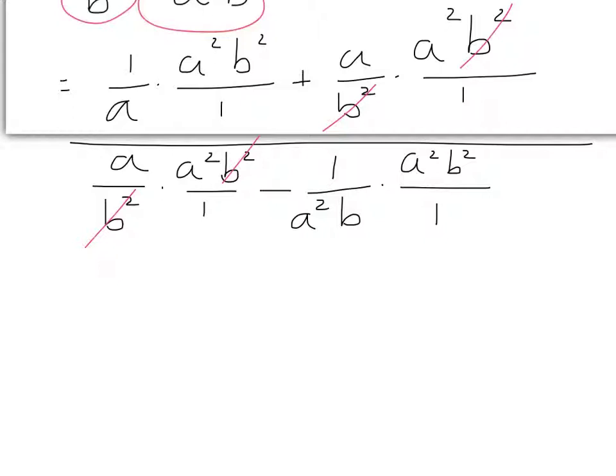Drop down the 2, giving x plus 2. Divide: x divided by x is 1. Put that 1 on top. Multiply: 1 times x is x, and 1 times 2 is 2. Line those up. Subtract: x minus x is 0, and 2 minus 2 is 0. The remainder is 0 — you can't go any further because there's nothing left. The quotient is what's on top. There was no remainder, so you just write the quotient. Divide, multiply, subtract, bring down — repeat until you run out of stuff.